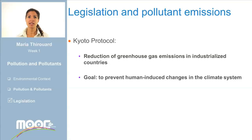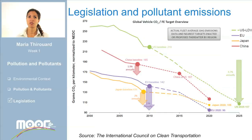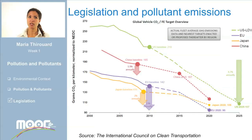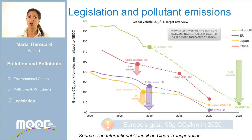With the Kyoto Protocol, industrialized countries all over the world signed a treaty that sets binding obligations to reduce emissions of greenhouse gases. The goal is to prevent dangerous human-induced changes in the climate system. This graph shows the decreasing trend of CO2 emissions for all new cars sold throughout the years. The US is in green, Europe in blue, Japan in yellow, and China in red. As a consequence of the Kyoto Protocol, the transport sector in those countries has undertaken to reduce the average fleet's emissions of new cars sold. The goal in Europe is to achieve 95 grams of CO2 per kilometer in 2020 for the average fleet.